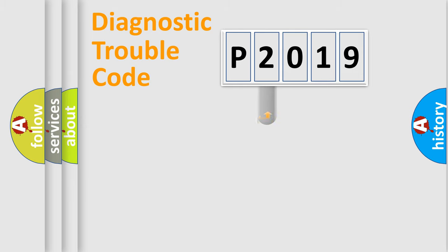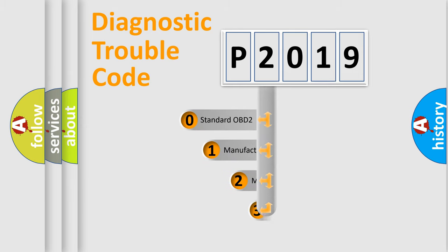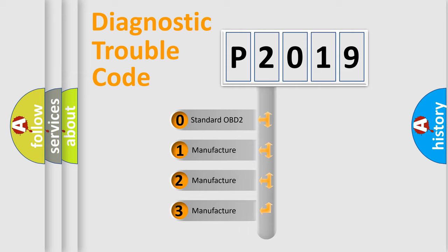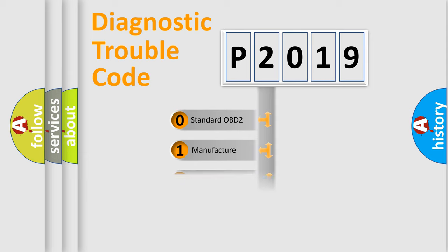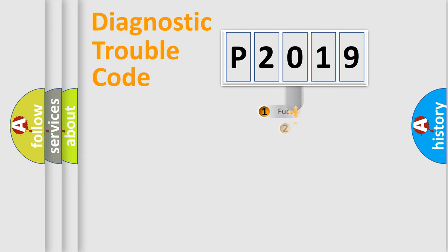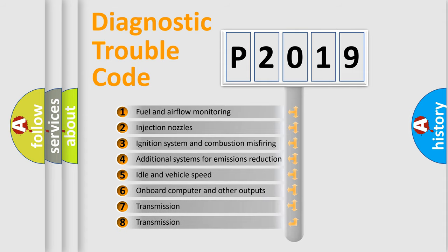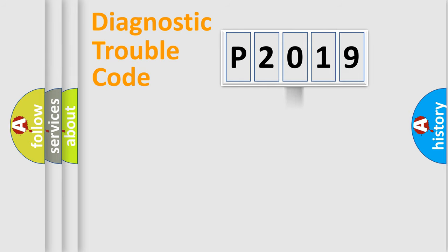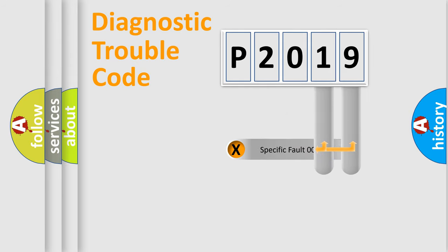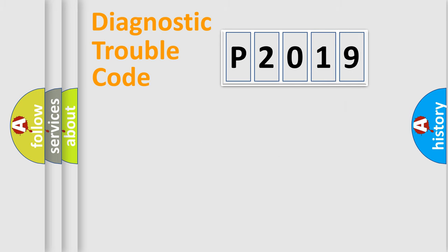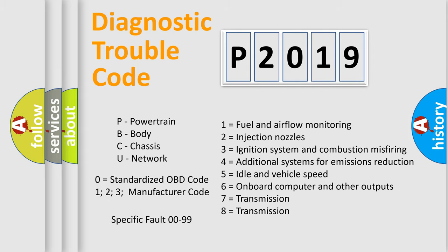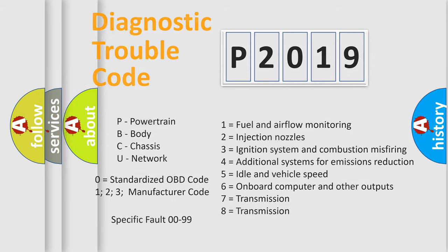This distribution is defined in the first character of the code. If the second character is expressed as zero, it is a standardized error. In the case of numbers 1, 2, or 3, it is a more specific expression of a car-specific error. The third character specifies a subset of errors. This division is valid only for the standardized DTC code, and only the last two characters define the specific fault of the group.